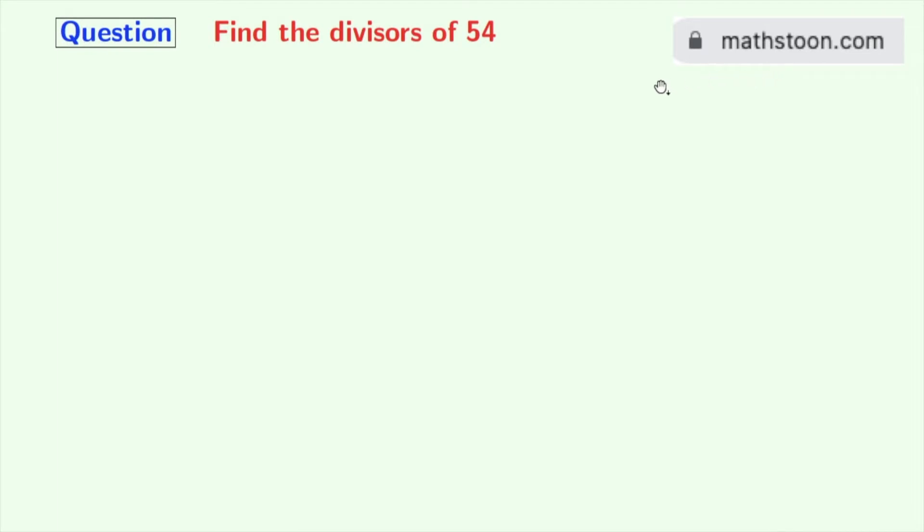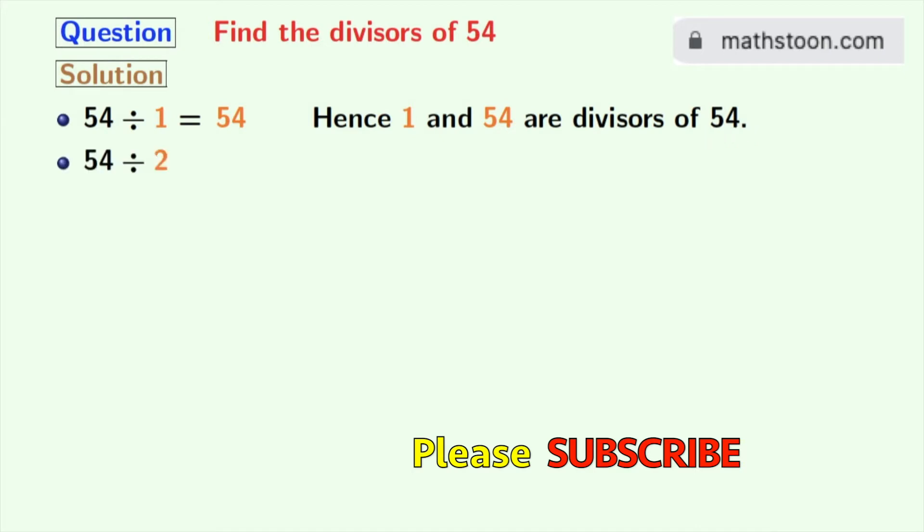Now let's start. Let us start from 1. 54 divided by 1 is 54, hence 1 and 54 are the divisors of 54. 54 divided by 2 is 27, so 2 and 27 are the divisors of 54.